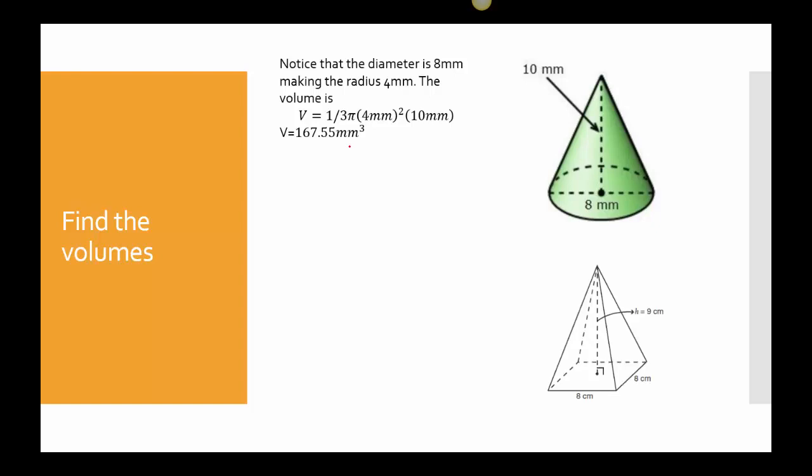Let's do the same thing with the pyramid. This pyramid has a square base. It's eight by eight. It has a height of nine. So I have one third. The base, eight times eight. And the height is nine. When I multiply that together, I got 192 centimeters cubed.